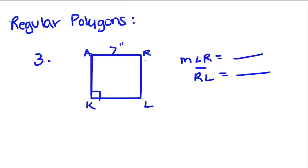This, we know, is a regular polygon. And like I said before, a regular quadrilateral, because it has four sides, is called a square.